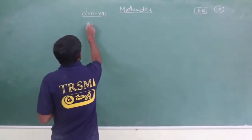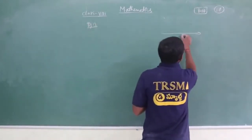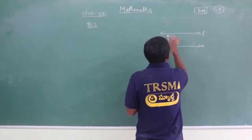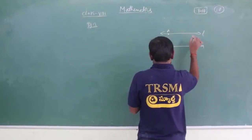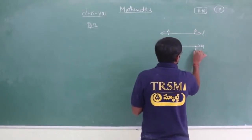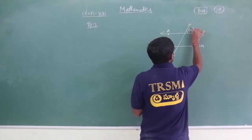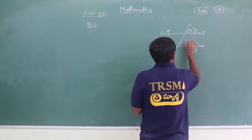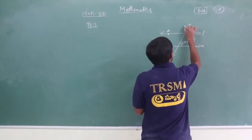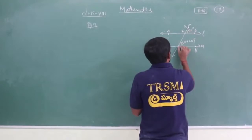Now coming to example number 13. Here I have a diagram with two lines parallel to each other, that is L and M, and here I have points A, B, C, D. This is the transversal. Here we have the angle 5x and here we have 2x plus 24 degrees. The points mentioned are E, F, and G.